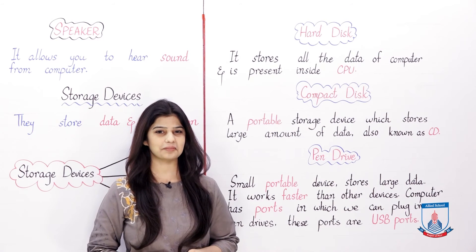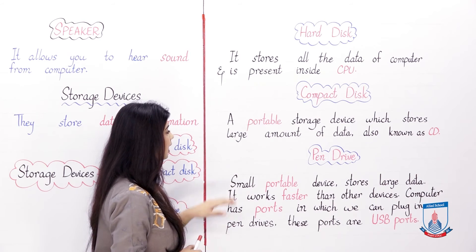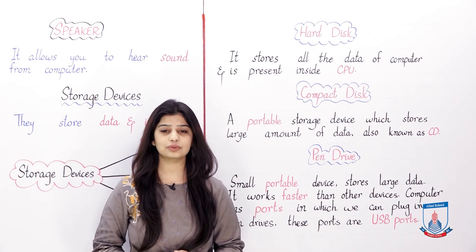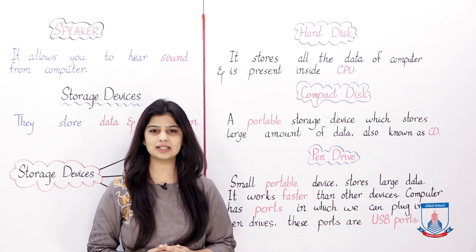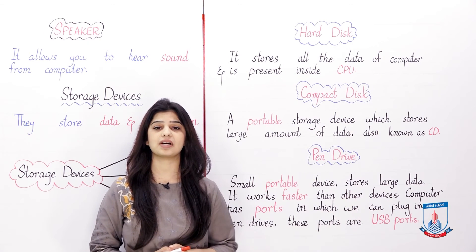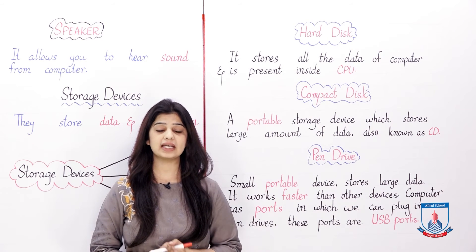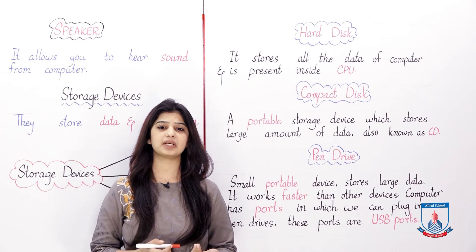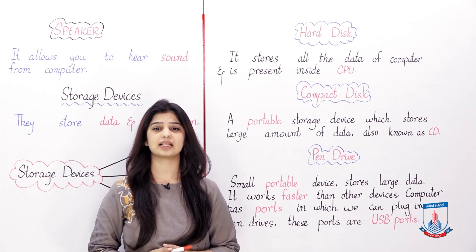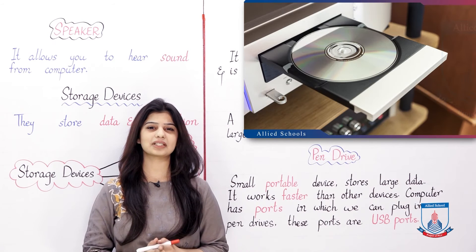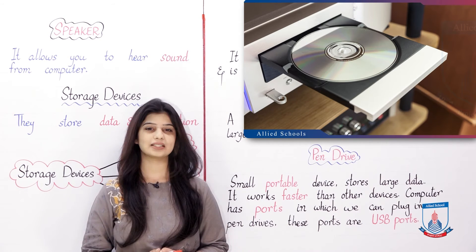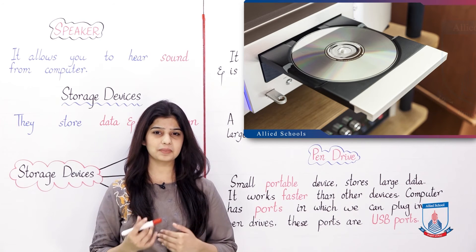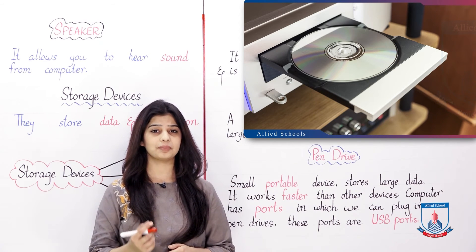Next is the Compact Disk — a portable storage device which stores a large amount of data, also known as CDs. You will have heard the names of CDs and DVDs. These are portable storage devices. Portable means easy to use and easy to carry. These devices are not fixed — you can put them on one computer, then move them to another. You can store songs, movies, pictures, documents, or anything you want.